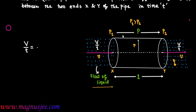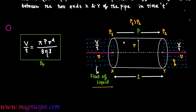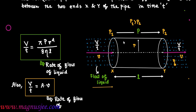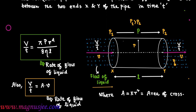Additionally, V by T equals pi P r to the power 4 divided by 8 eta L, which is the rate of flow of liquid through the horizontal tube. V by T can also be written as A dot v, where A is the area of cross section of the horizontal tube, equal to pi r squared, and small v is the velocity with which liquid flows into and out of the tube.